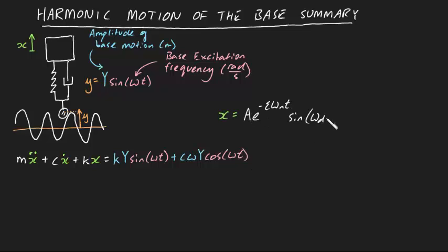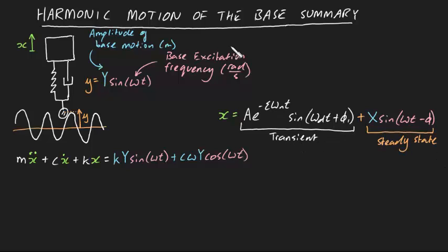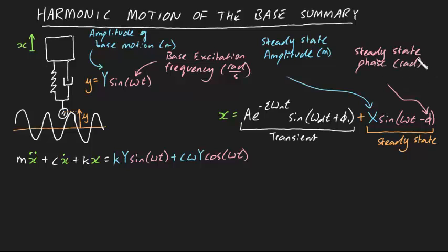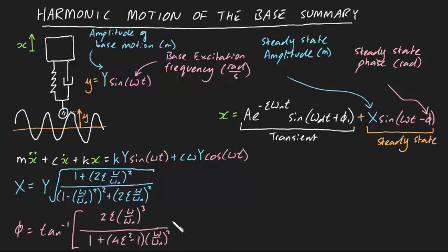The solution to this will have two parts, the transient response and the steady-state response. The capital X is called the steady-state amplitude in meters, and phi is called the steady-state phase in radians. Capital X is given by this expression, whereas phi is given by this expression.